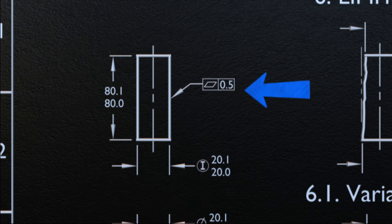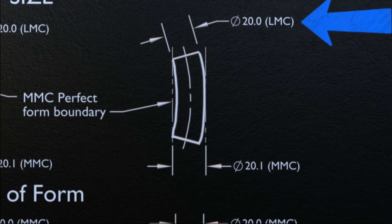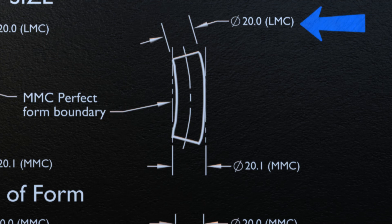No variation in form is permitted if the regular feature of size is produced at its MMC limit of size, unless a straightness or flatness tolerance is associated with the size dimension, or the independency symbol is applied as illustrated. Where the actual local size of a regular feature of size has departed from MMC toward LMC, a local variation in form is allowed, equal to the amount of such departure, and where there is no default requirement for a boundary of perfect form at MMC. Thus, a regular feature of size produced at its LMC limit of size is permitted to vary from true form to the maximum variation allowed by the boundary of perfect form at MMC.